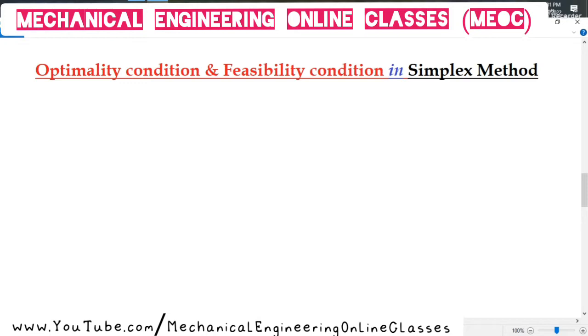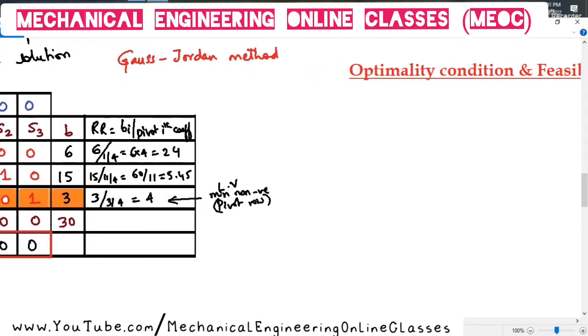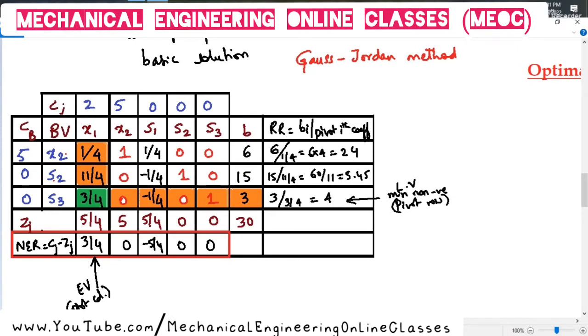Optimality condition depends on whether we can find an entering variable or not. If we take an example of the problem that we have just solved, here we have found the net evaluation row as Cj minus Zj and for a maximized type of problem, if the Cj minus Zj is all zeros or negatives, then the optimality is attained.